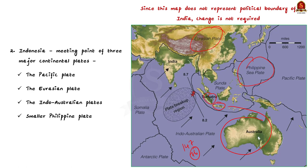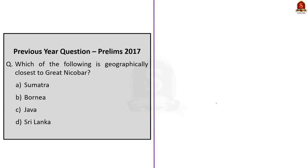With this, we have come to the end of this discussion. Through this discussion, we saw about the location of Indonesian islands and the reasons for the frequent eruption of volcanoes and earthquakes, as well as the transfer of the capital of Indonesia from Jakarta to Nusantara. Now let's move on to the next article discussion.